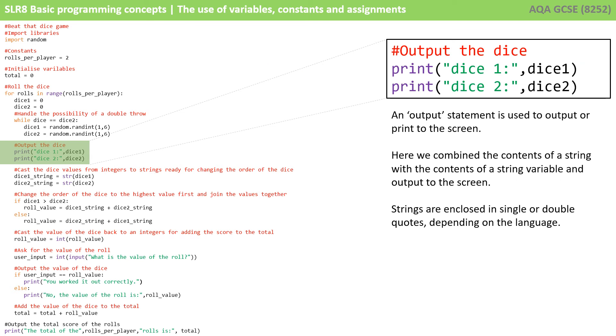The next thing to cover here is outputting, another quite common thing to do in programs. We gather input, we process that input in some way, but typically we also need to report the output to the user so they know what's going on. An output statement is used to print to the screen in Python. Here we've combined the contents of a string, dice one colon or dice two colon, with the contents of a variable, dice one or dice two. You'll notice that strings are enclosed in single or double quotes, and this depends on the language.